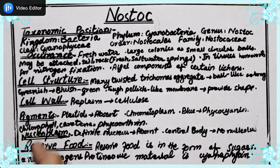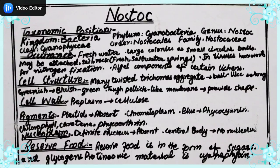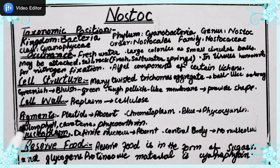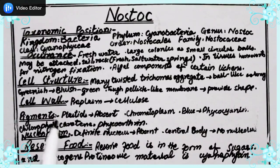They are present in freshwater ponds and streams in the form of small colonies, or circular ball-shaped colonies. They may be attached or floating over the freshwater. If attached, they may be present on soil or rock, in fresh or salt water, or in hot springs.